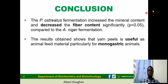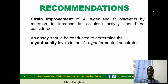To conclude, Pleurotus ostreatus fermentation increased the mineral content and significantly decreased the fiber content compared to Aspergillus niger fermentation. This project has shown that YAM peels can serve as a very good source of animal feed for livestock, helping to avoid competition between human beings and animals. Recommendations include strain improvements of Aspergillus niger and Pleurotus ostreatus through mutations to increase enzyme activity — specifically xylanases and amylases. An assay should also be conducted to ascertain the mycotoxicity level in the Aspergillus niger substrate, since A. niger is known to produce aflatoxin, which is a carcinogen.